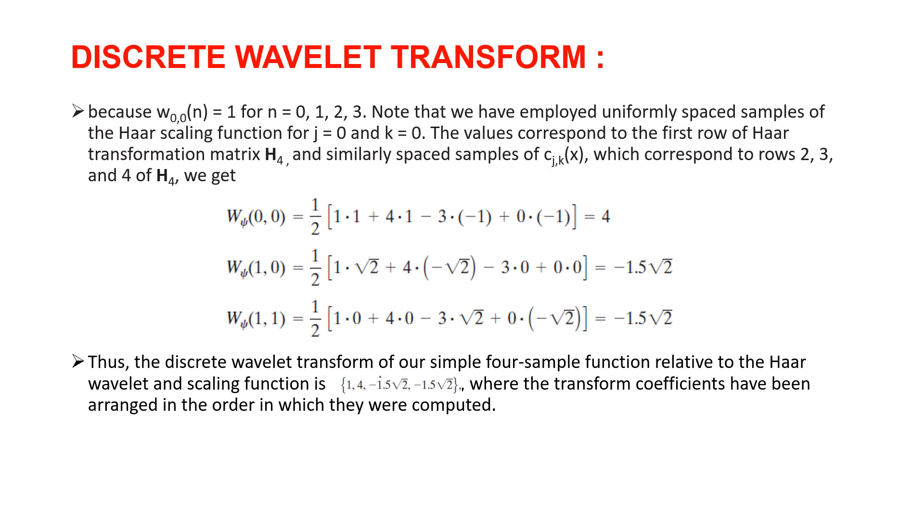So the discrete Wavelet transform of our simple four-sample function related to the Haar Wavelet and scaling function is 1, 4, -1.5√2, and -1.5√2, where the transformation coefficients are arranged in the order which they were computed.